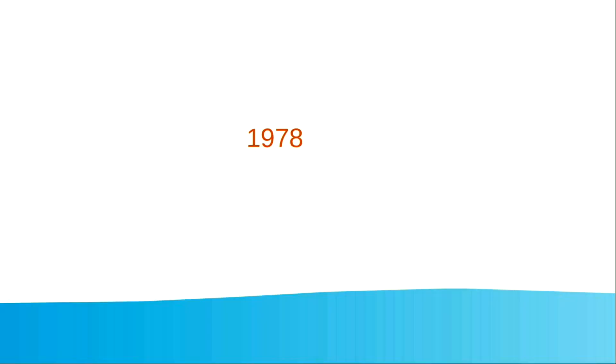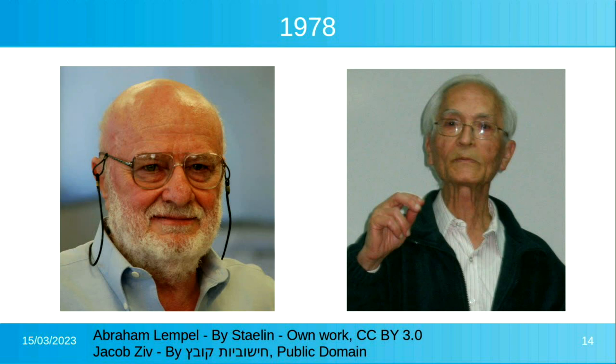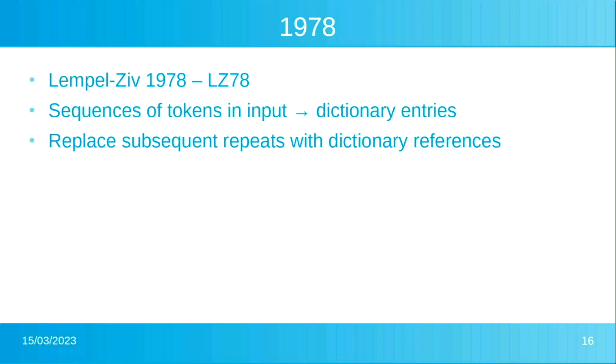Moving on to the next year, 1978 — these two gentlemen, not satisfied with releasing one algorithm, released a second called LZ78. This works slightly differently: it learns sequences of adjacent characters or symbols in the input and puts them into a dictionary, and then the output is the longest dictionary entry that matches at the time of encoding.